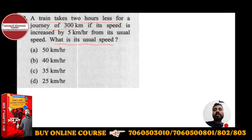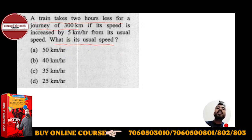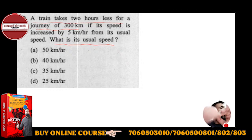I am giving you an example. If the train speed was 100 km per hour, the train takes 6 hours. If the speed is increased by 5 km per hour — so 105 km per hour — then it takes 2 hours less. So this is the concept. Let's solve it now.